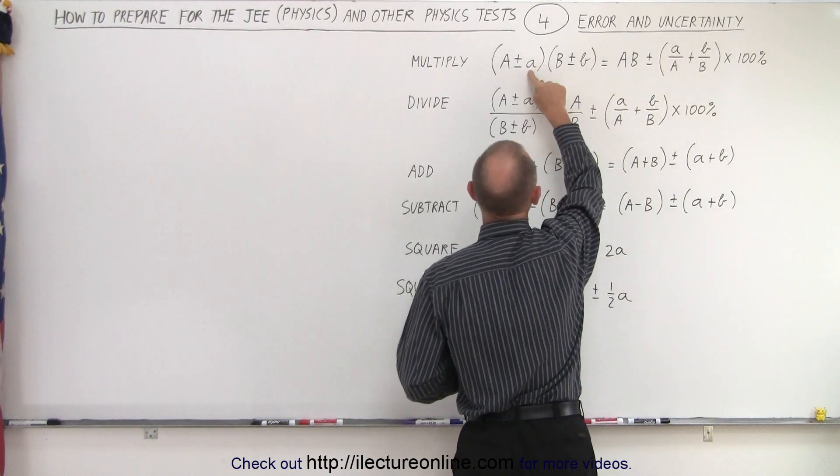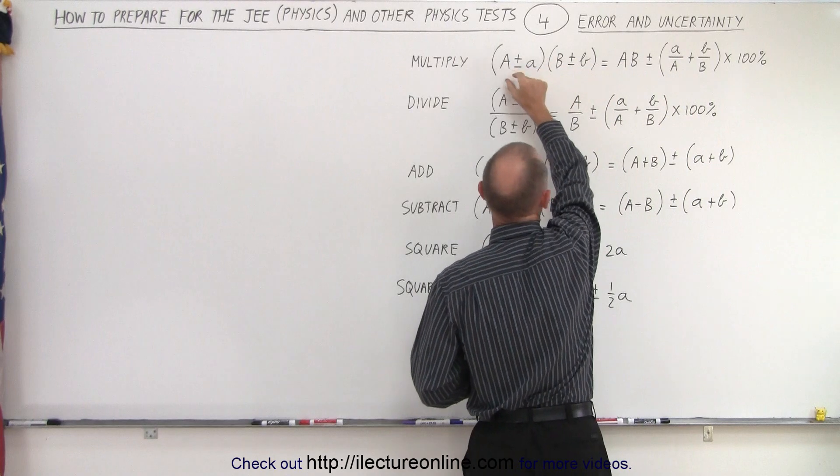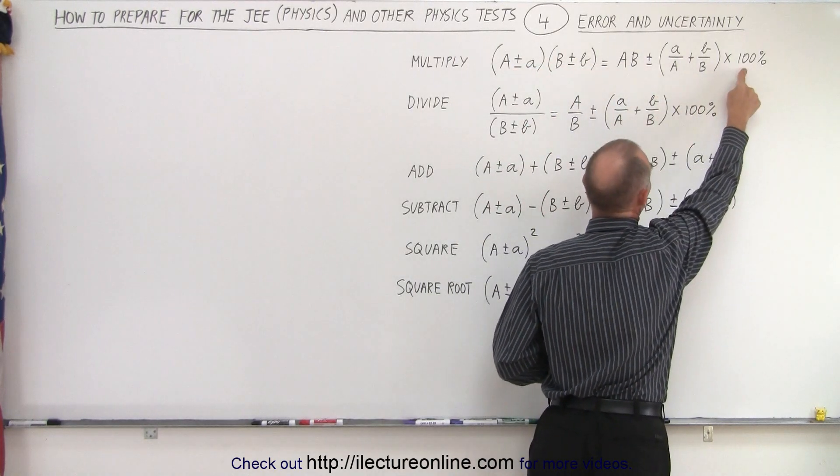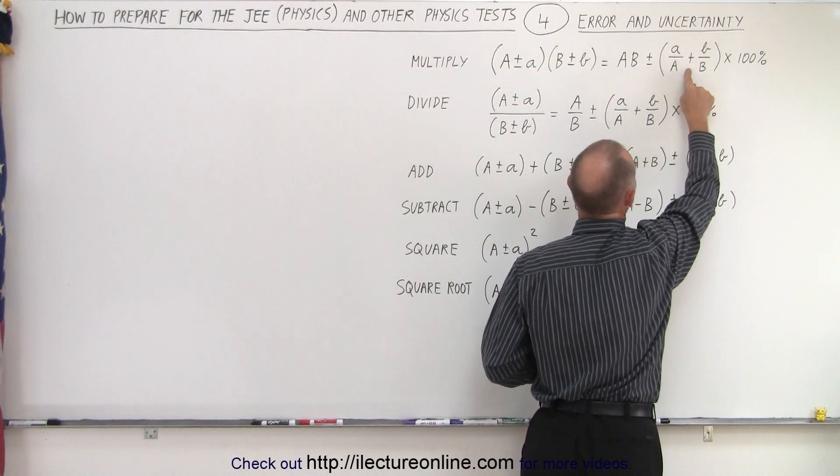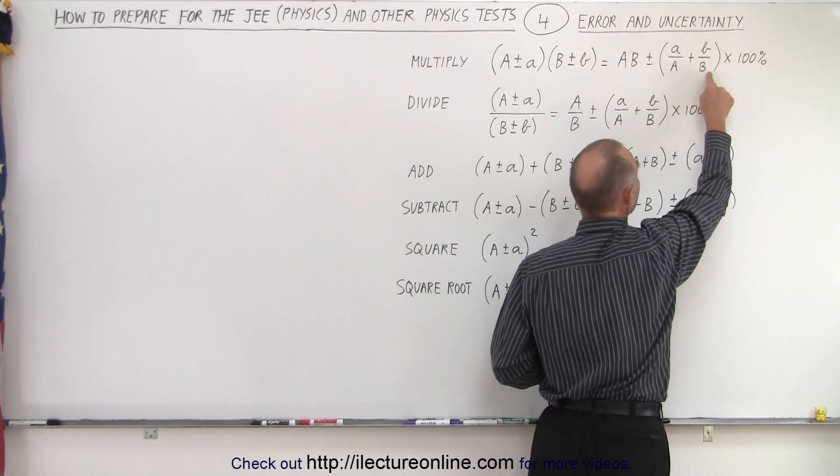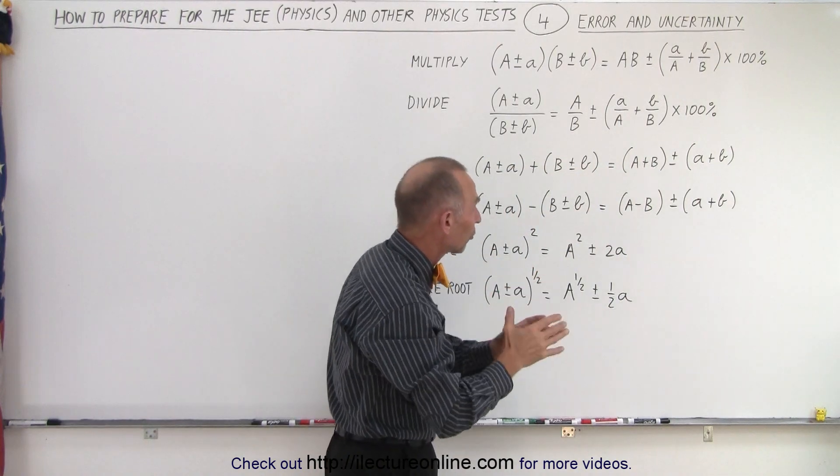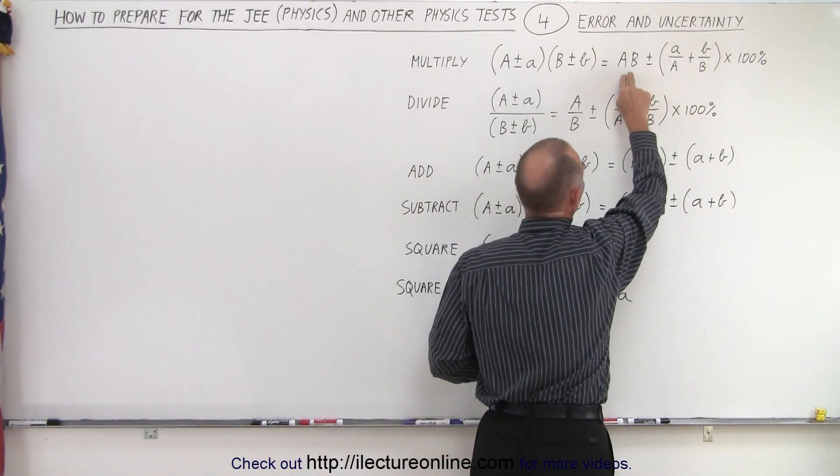And so then the product of that will be A times B, plus and minus A divided by big A, which is the fraction of the uncertainty relative to the measurement, converted to a percentage, and then add that to the fraction of the uncertainty in B, divided by B, again times 100%. In other words, we're adding the percent uncertainties together when we multiply two numbers.